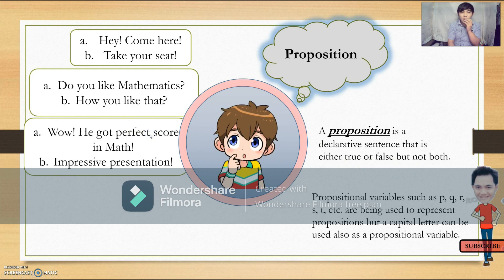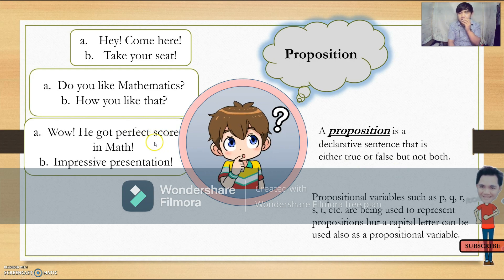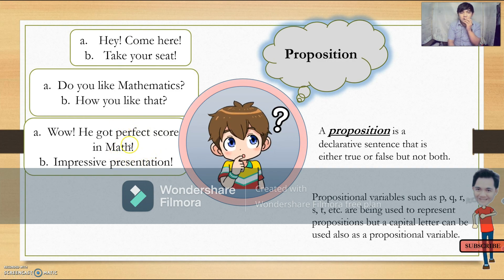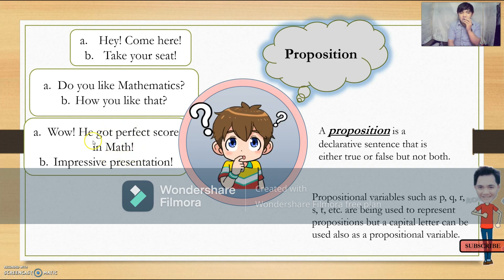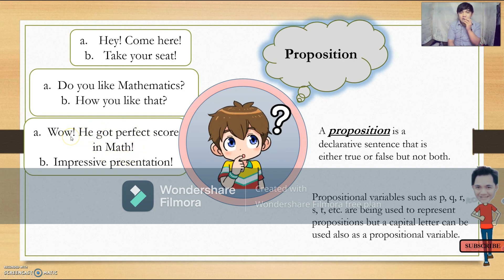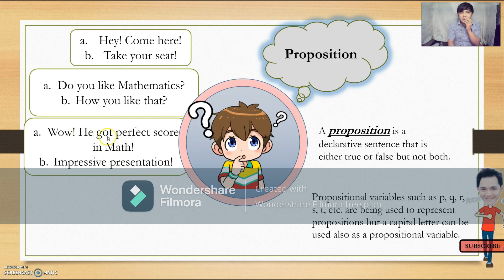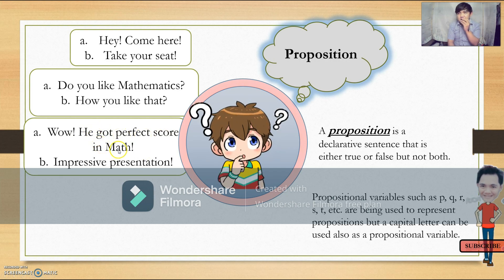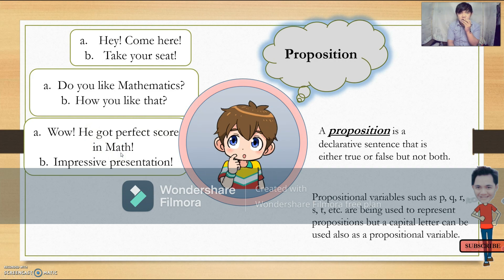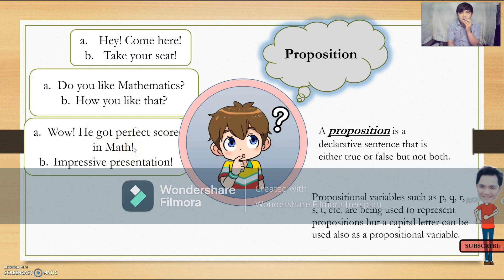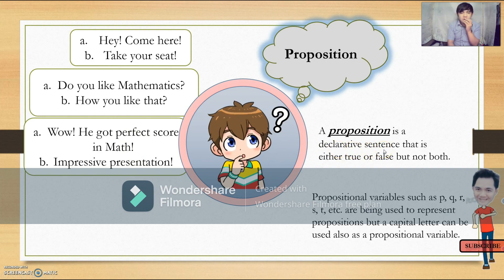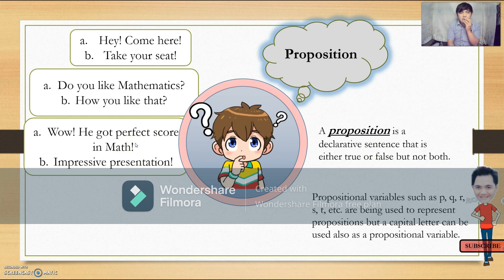Next set: "Wow, he got perfect score in math." and "Impressive presentation." These two are not considered as propositions because they are not declarative sentences. Look at this — "He got perfect score in math" is answerable by true or false, but the ending is an exclamation mark. Our definition for declarative sentence says it must end with a period. So therefore, this one is not considered as a proposition.